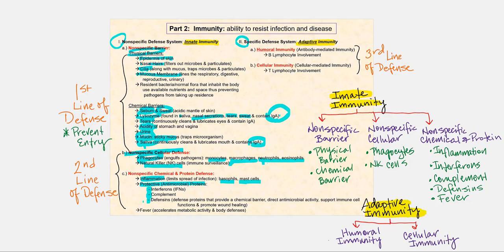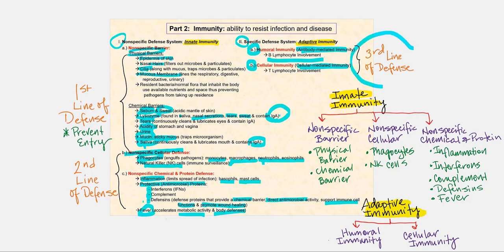Defensins are defense proteins that provide a chemical barrier. They directly attack microorganisms, including viruses, support immune cell functions, and promote wound healing. The last type of nonspecific defense is fever — by increasing our body temperature, this will accelerate metabolic activity as well as our immunity. Let's focus on adaptive immunity, the specific defense system. We have humoral immunity and cellular immunity.